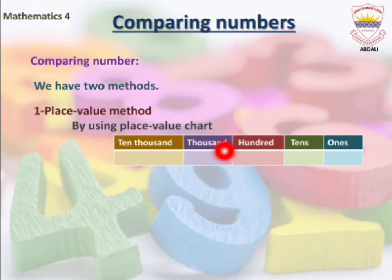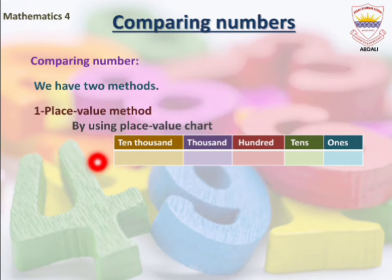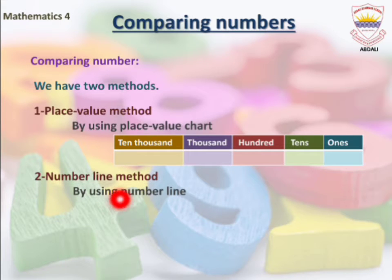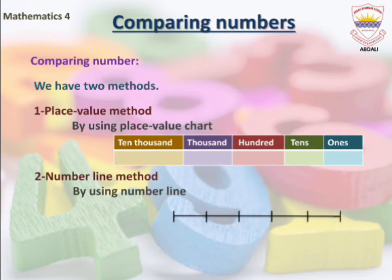In the place value chart, there are five places: ones, tens, hundreds, thousands, and ten thousands. By using this place value chart, we compare numbers. Our second method is the number line method, by using a number line.